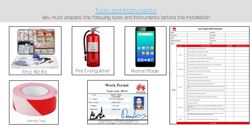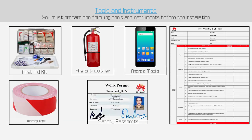Basic requirements for all sites include: First Aid Kit, Fire Extinguisher, Android Phone, Warning Tape, Safety Passport and EHS Work Permit Card, EHS Site Checklist, and the required certifications. Using ISDP, the following steps are done for EHS task submission.